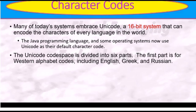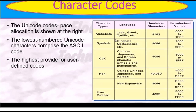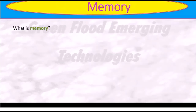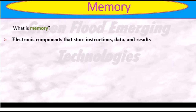Many of today's systems are based on Unicode, especially 16-bit systems that can record the characters of every language in the world. Like Java programming and other reading systems, Unicode is their default character encoding, because it supports 16-bit systems. The Unicode code space is divided into parts — the first part covers Western alphabet codes including English, Greek, and Russian — Latin and Greek in different languages are supported by Unicode. The 16-bit system allows almost 65,000 representations, and the Unicode characters comprise ASCII codes that provide backward compatibility.